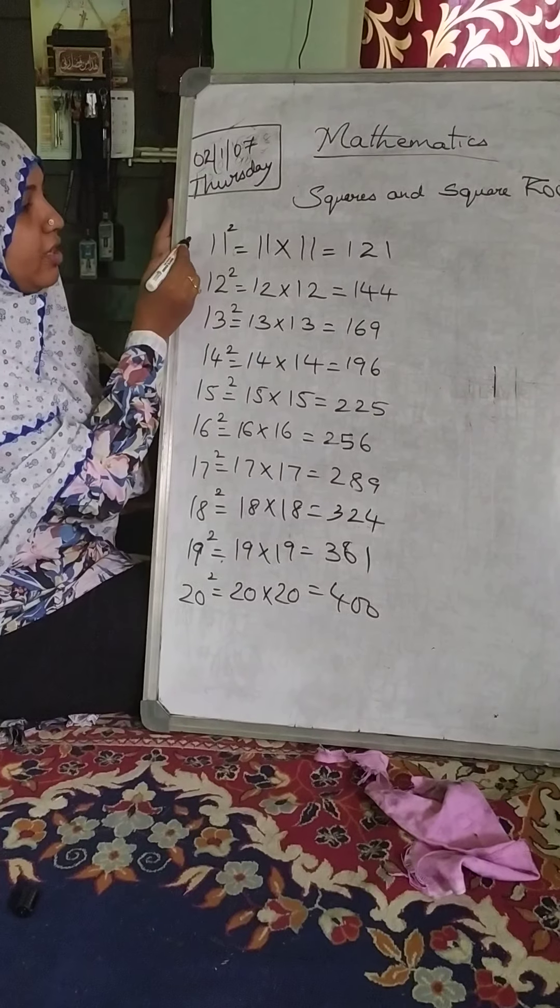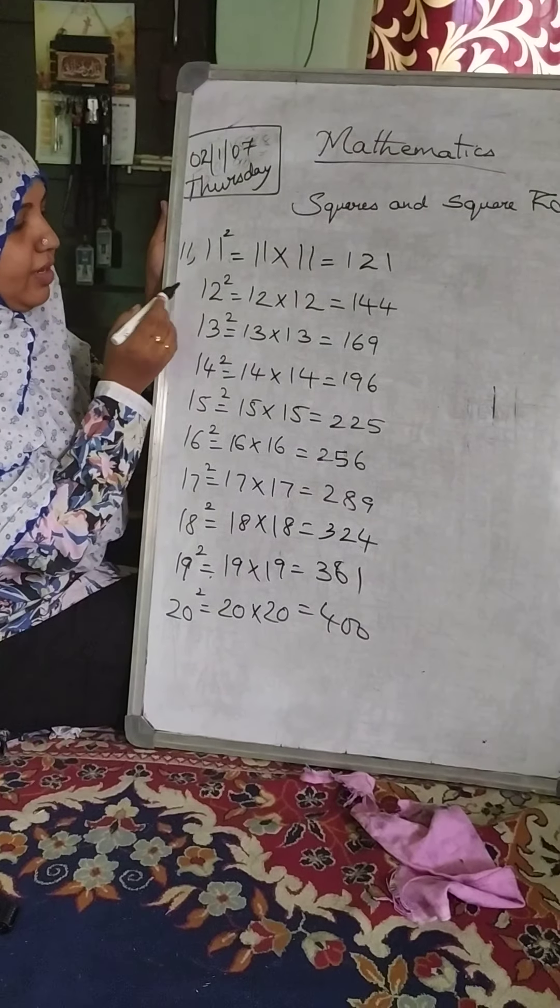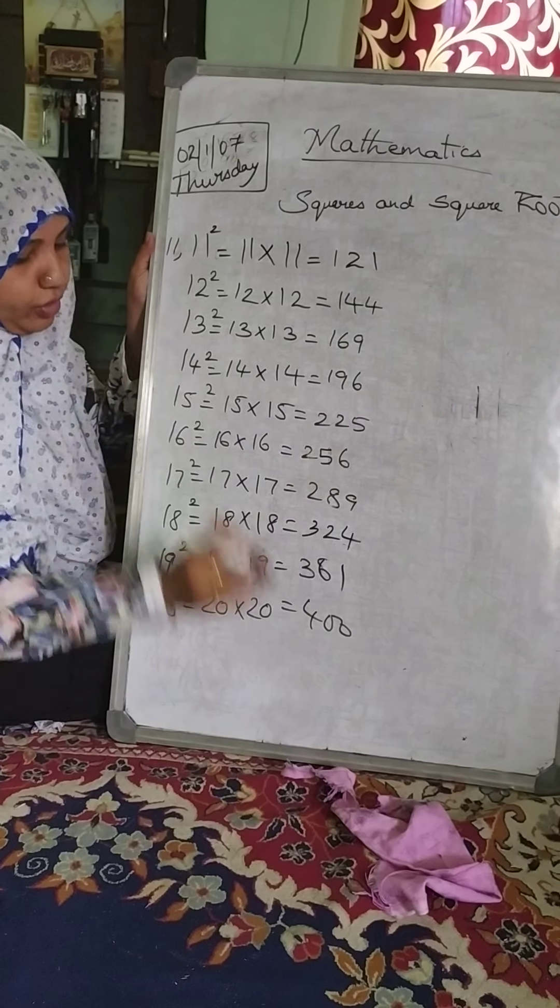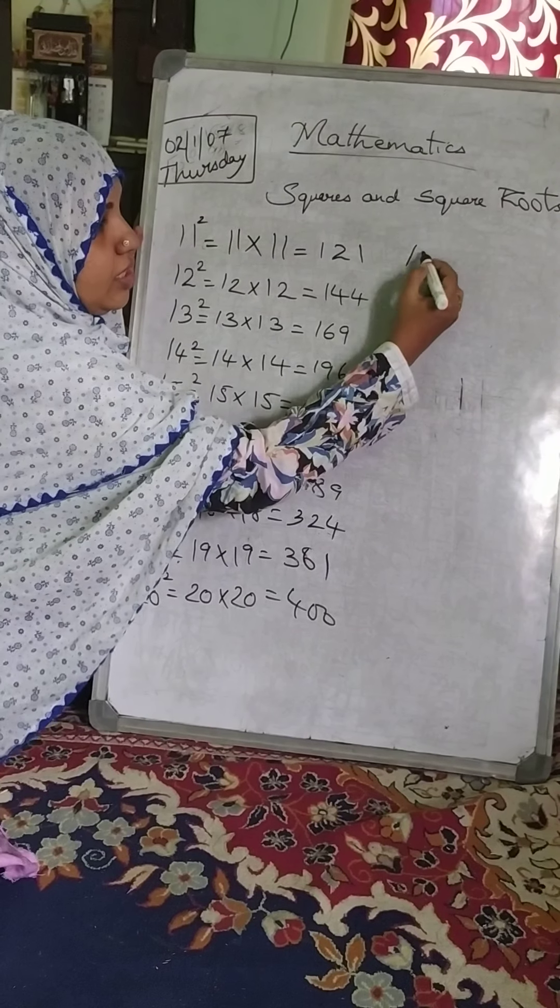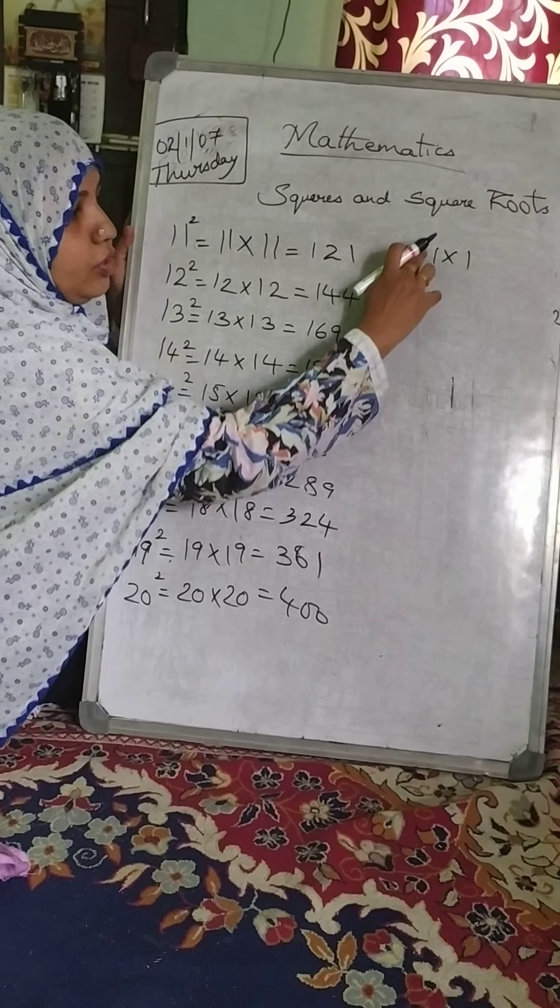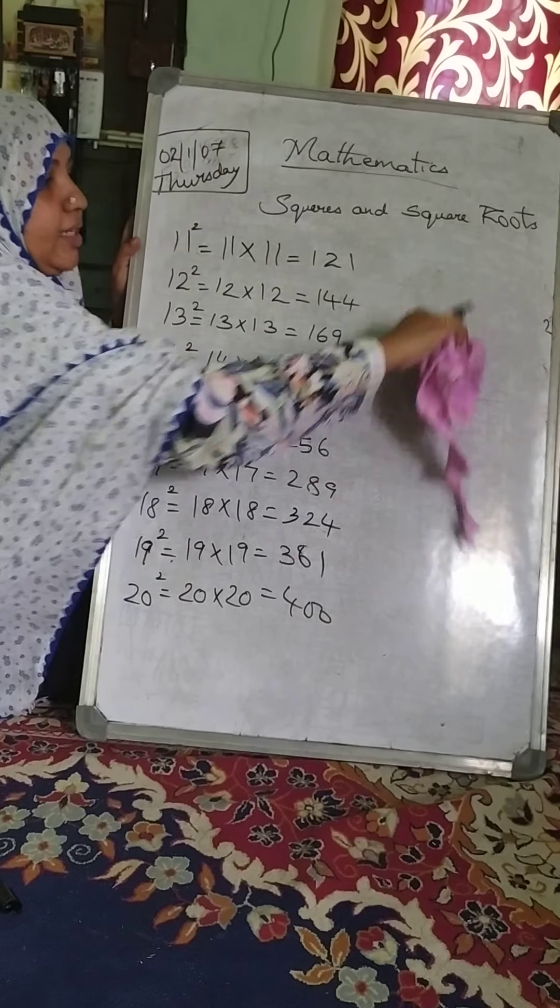Now see for 11 here we are doing, 11 will be 11 square. 11×11 will be 121 like that for 12, 12 square will be 144, 13 square. Now previously I wrote 1 is equal to 1 into 1, it is not is equal to children. For 1 I have written, don't confuse, for 1 I wrote that it is actually 1 square.